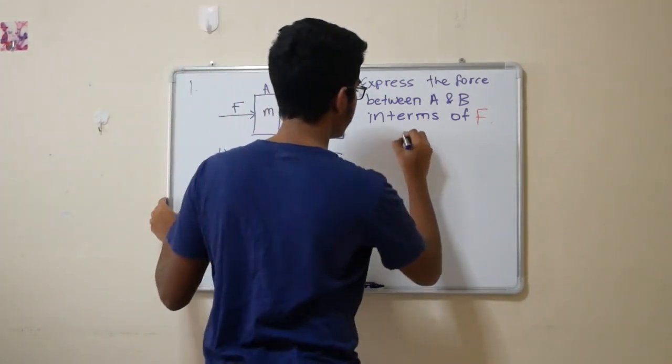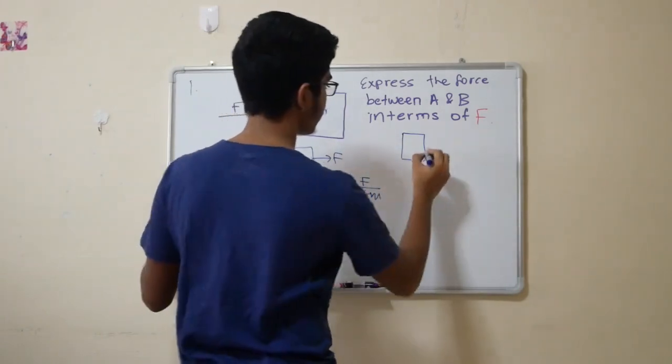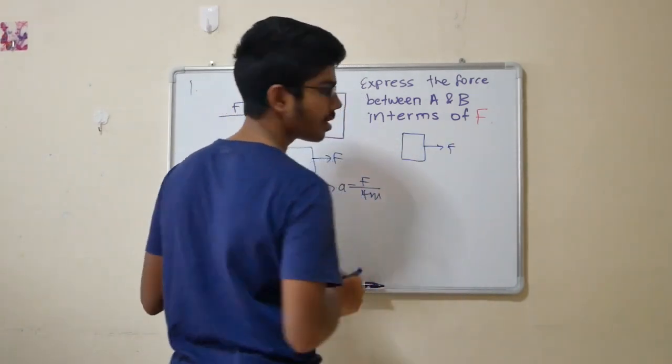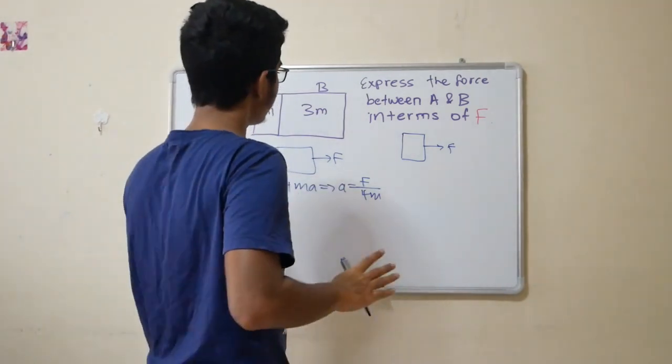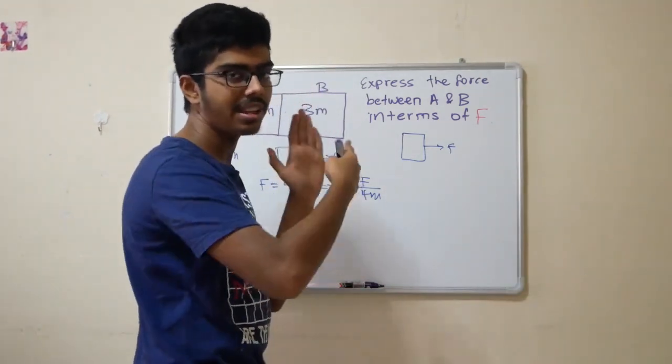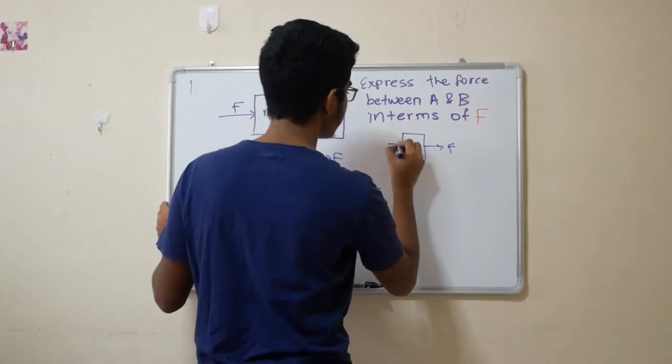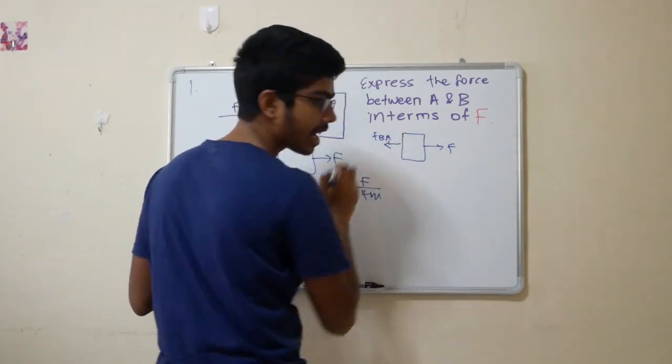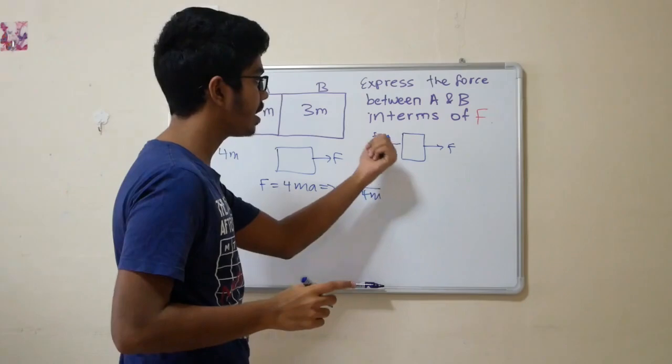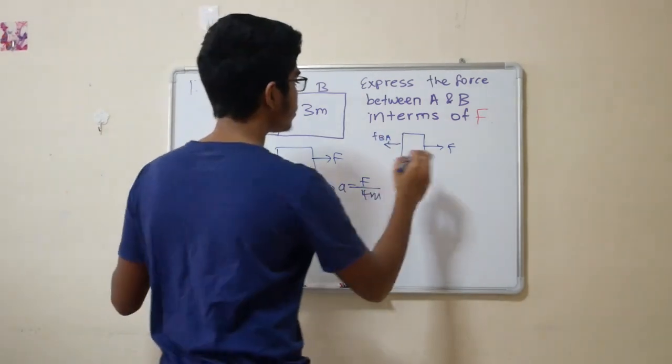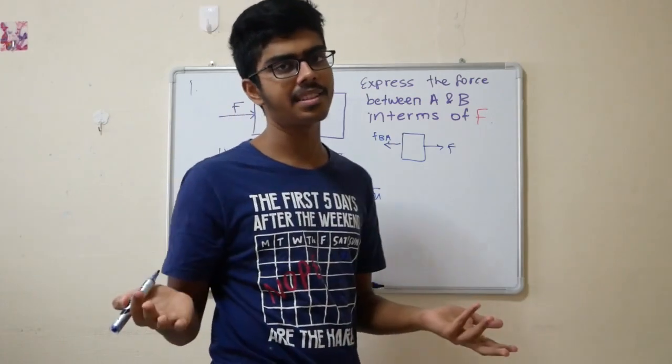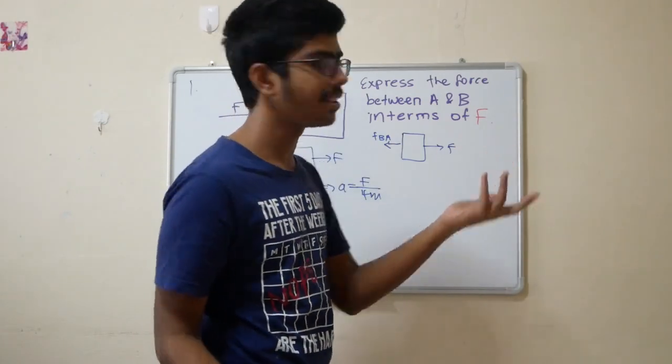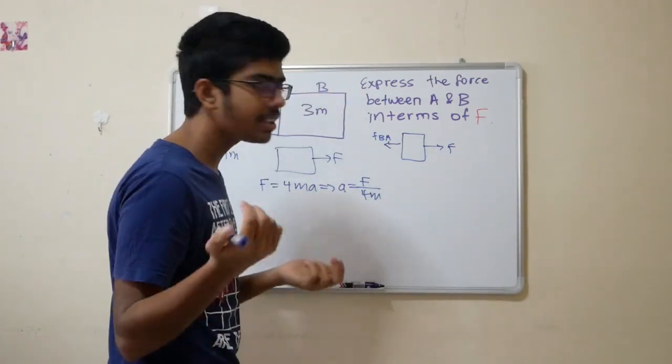Now, for body A, draw the free body diagram. If A is the system, you have a force F. And now, B exerts a force on A because if you're pushing against B, B will naturally resist it. So, this is F_BA. Note the direction, guys, from B to A, not A to B.